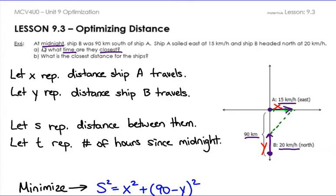It's the hypotenuse of a right-angle triangle. We're going to use the Pythagorean theorem since S is the distance we want to find. In order to apply it, I need to know the vertical leg. Since the entire distance between the two points is 90, and ship B has traveled Y, that vertical leg must be 90 minus Y.